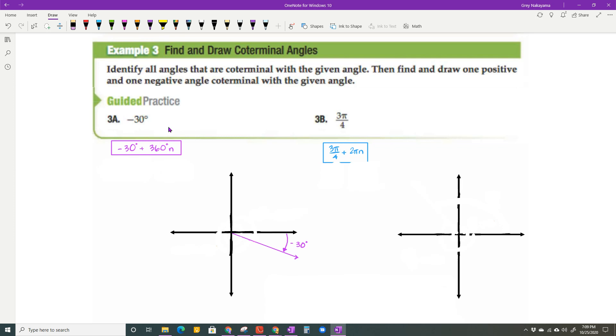And if I want one positive angle, then that means that I can start at that zero and go in a counterclockwise direction. And the measure of that angle is going to be negative 30 plus 360 degrees. And that's going to be 330 degrees.